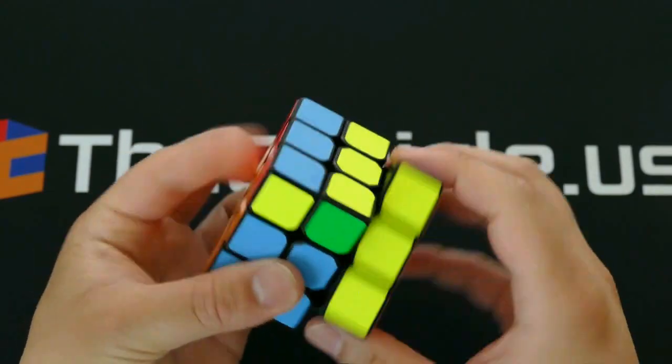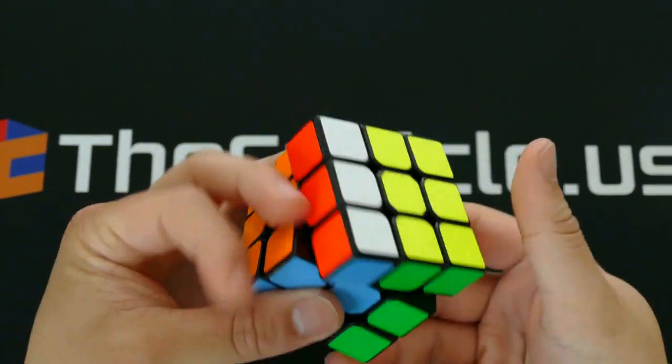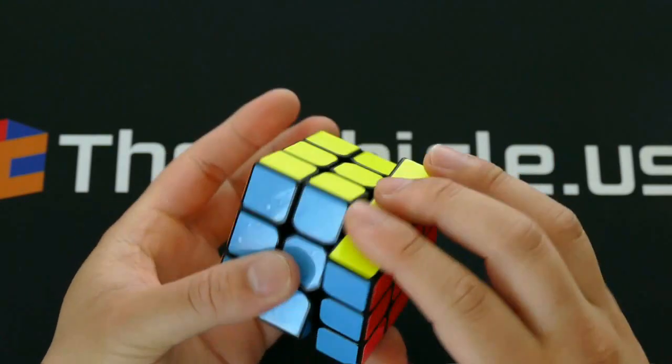This cube is extremely fast and boasts very light turning resistance. The Hualong is currently the cube of choice for many top 3x3 solvers.